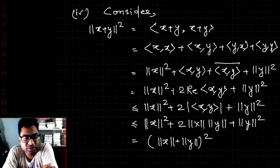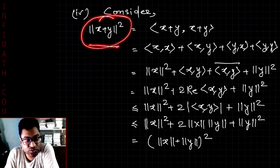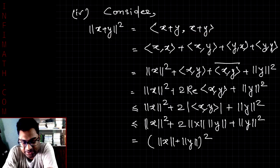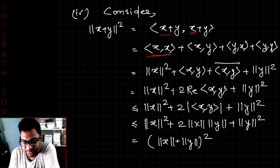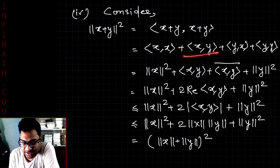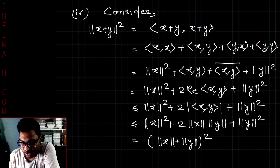For the last property, we prove the famous triangle inequality using the Cauchy-Schwarz inequality. We consider the square of the norm of x plus y, which equals ⟨x + y, x + y⟩. Expanding gives ⟨x, x⟩ + ⟨x, y⟩ + ⟨y, x⟩ + ⟨y, y⟩, which equals norm of x squared plus ⟨x, y⟩ plus ⟨y, x⟩ plus norm of y squared. Since ⟨y, x⟩ = ⟨x, y⟩ conjugate, the middle terms combine.